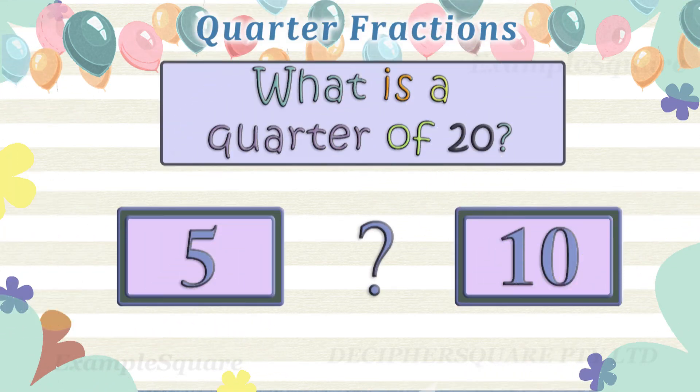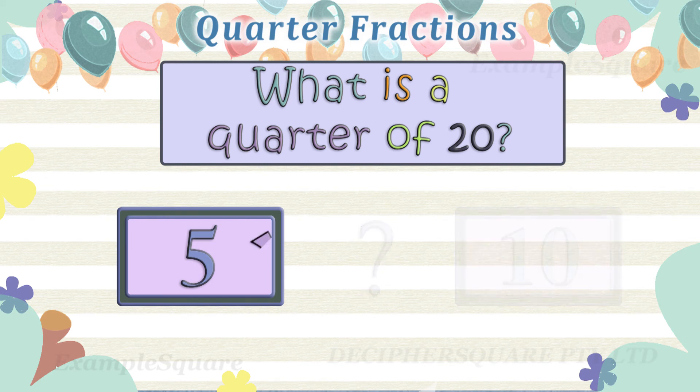What is a quarter of 20? A quarter of 20 is five.